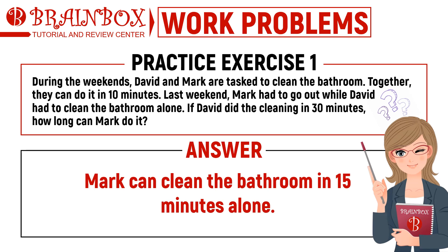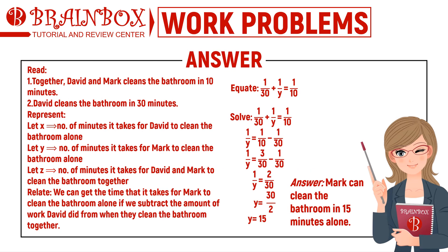Time is up. Mark can clean the bathroom in 15 minutes alone. From the problem, we know two things: first, together David and Mark clean the bathroom in 10 minutes; second, David cleans the bathroom in 30 minutes. We assign x = 30 (David's time alone), y = Mark's time alone, and z = 10 (their time together). Using the general formula: 1 over 30 plus 1 over y equals 1 over 10. Solving for y, we get 15. Therefore, Mark can clean the bathroom alone in 15 minutes.